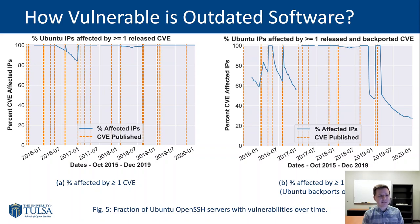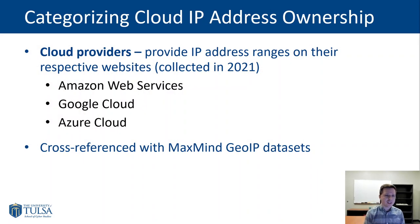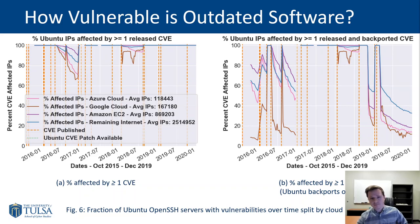We can see on the left-hand plot that the result is substantial — almost 100% of all OpenSSH servers running on Ubuntu are vulnerable to at least one CVE. But this is because not all CVEs were given backports. When we narrow it down to only CVEs that have backports, things are a little better on the right-hand side, but still not amazing. Additionally, with IP address information from cloud providers, we can see which cloud providers own specific IP addresses and look at those same plots split up by provider — Azure, Google Cloud, Amazon. In general, cloud providers do tend to update faster and therefore are not vulnerable to as many CVEs as the remainder of the internet.